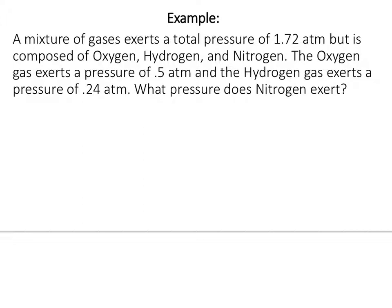Let me give you an example. A mixture of gases exerts a total pressure of 1.72 atm — that's atmospheres, our most common pressure unit. This mixture is composed of oxygen, hydrogen, and nitrogen gas. We know that oxygen gas exerts a pressure of 0.5 atm, hydrogen gas exerts a pressure of 0.24 atm, and we need to find the pressure of nitrogen in that mixture. Pause and try to solve this before coming back.